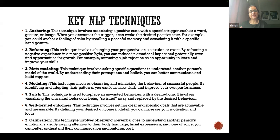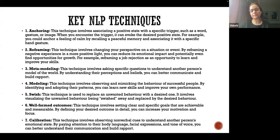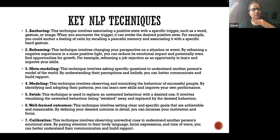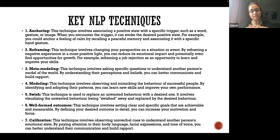Next is metamodeling. This technique involves asking questions to understand another person's model of the world — it's about clear communication. As much as you need to understand yourself, you also need to understand the outside world to strike a perfect balance and build good relationships, be it family, friends, or anyone. Then there is modeling — observing and mimicking the behavior of successful people, treating someone as your ideal. The other word for modeling could be inspiration: taking inspiration from someone to improve your own performance as a human being, whether for your goals or personal life.